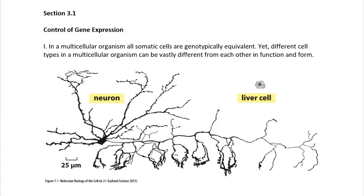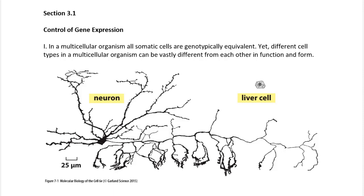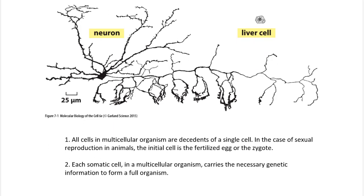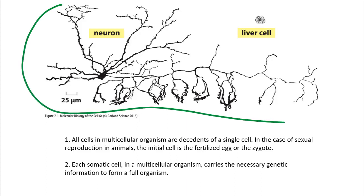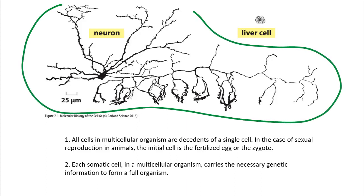Control of gene expression: in multicellular organisms, all somatic cells are genotypically equivalent, yet different cell types can be vastly different from each other in function and form. For example, a neuron and a liver cell are very different phenotypically, although they are genotypically the same.